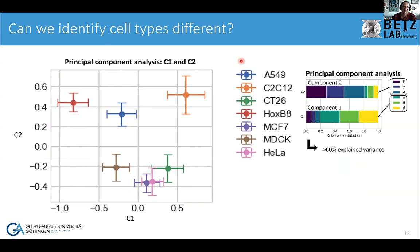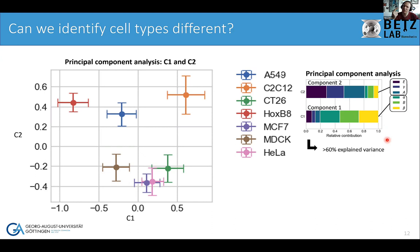We also performed principal component analysis to separate different cell types. We can quite nicely separate many cells by C1 and C2. Cells we cannot separate turn out to be functionally related — the epithelial cells cluster together. Principal component one is largely a linear combination of alpha, beta, and B — not surprising given their correlation — and something high in C1 is more solid-like while something low is more fluid-like.